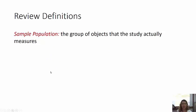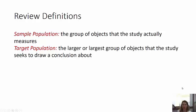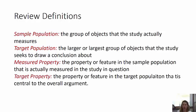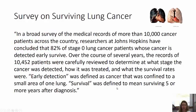Let's review some of these definitions. The sample population is the group of objects that the study actually measures. The target population is the largest group of objects that the study seeks to draw a conclusion about. The measured property is the property or feature in the sample population that is actually measured in the study. The target property is the property or feature in the target population that is central to the overall argument — it's actually what you're trying to get at, the percentage of smokers smoking in the target population.